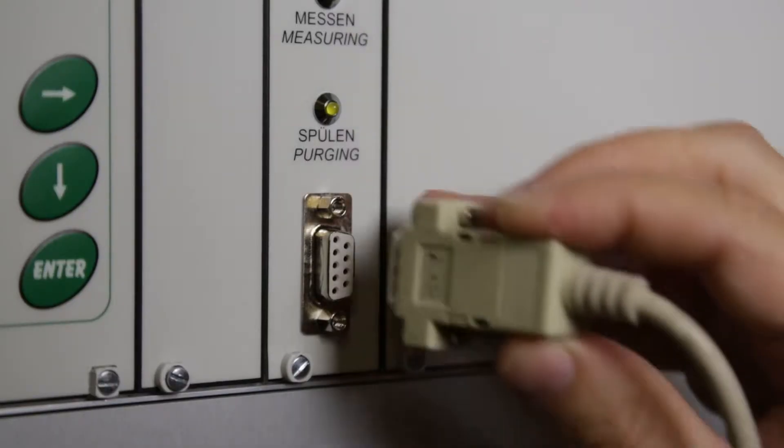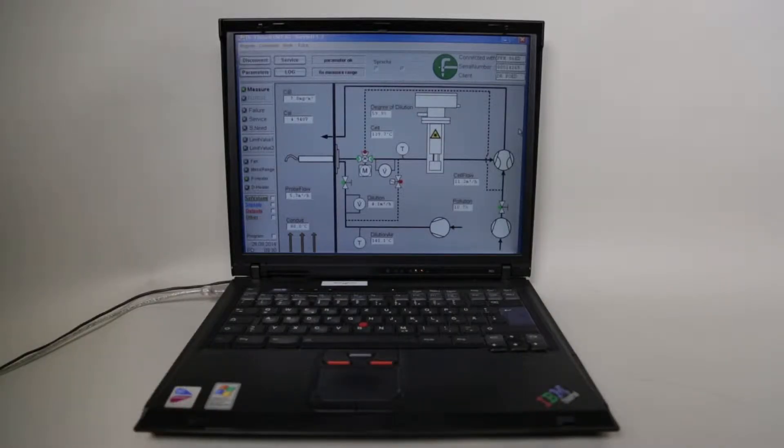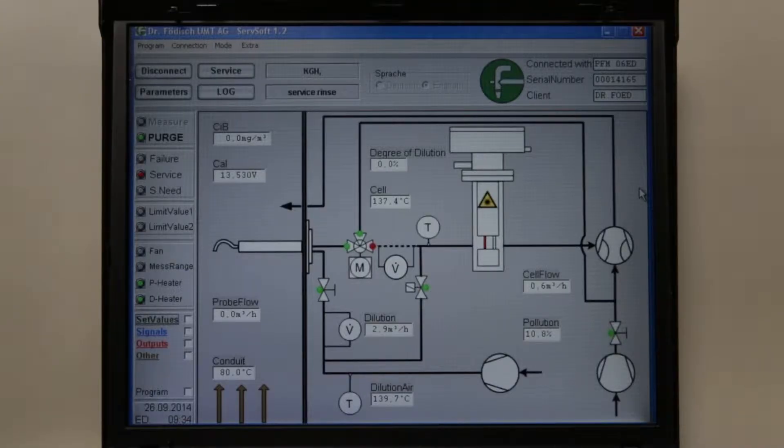If the control unit is connected to a PC via serial RS-232 interface, the service software displays all measuring values and calculated values clearly. You can also save all settings and messages directly at the PC.